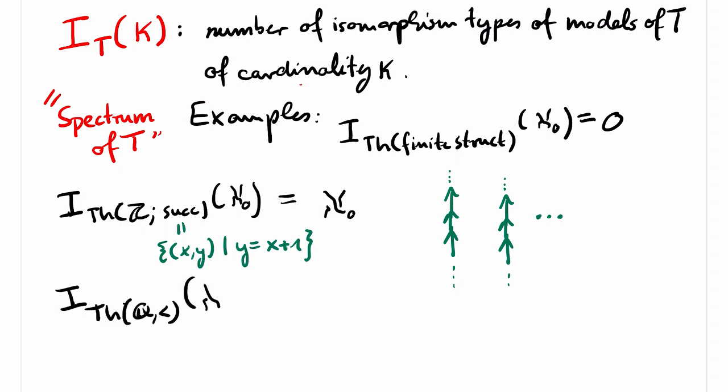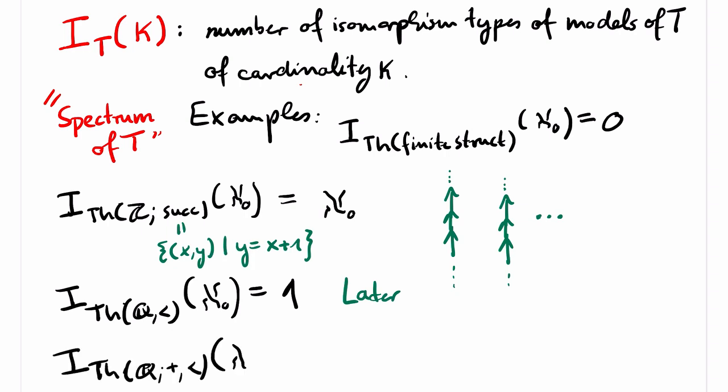My next two examples will be treated explicitly later in the course. I present them here as facts without proofs. The first is that the theory of the order of the rationals has exactly one countable model, so first-order logic describes this structure uniquely up to isomorphism. The second is the other extreme: the first-order theory of the rational numbers with addition and a strict order has continuum many, that is 2 to the aleph_0 many countable models. Note by our assumption that the signature is countable, this is the maximum possible. There are only 2 to the aleph_0 many countable structures with a countable signature.